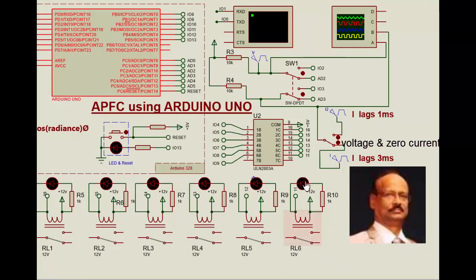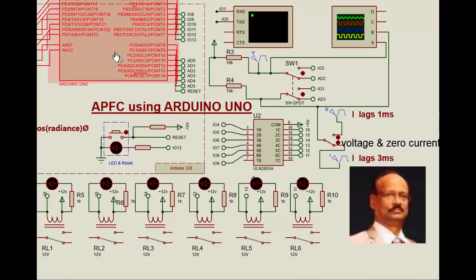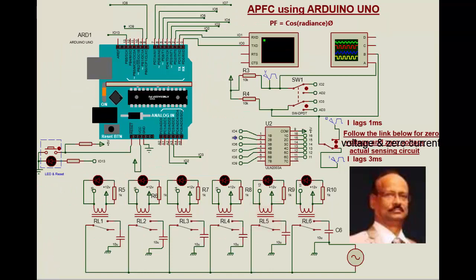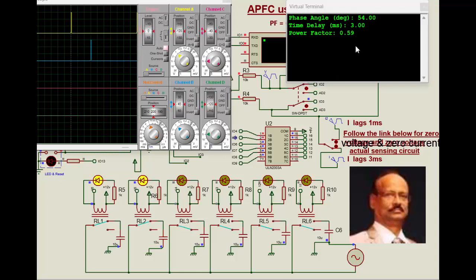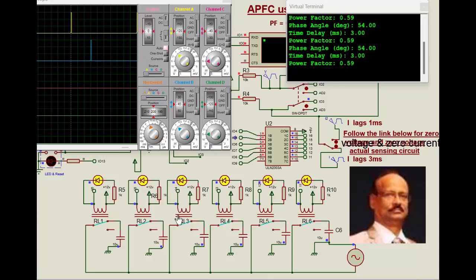We have the actual library from the Proteus but both of them are the same. When we operate this, what we notice is the serial monitor reads 0.59 because that's the power factor delay of 3 milliseconds. If the current lags by 3 milliseconds, it goes on switching on all the capacitors and the power factor improves to about 0.99. There is a 3 millisecond delay here between voltage and current reference.